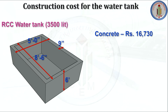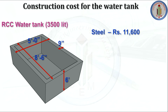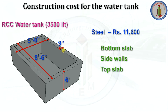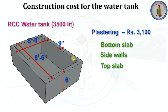For reinforced steel — bottom slab, sidewalls, and top slab — we require 11,600 rupees. Walls have double mat reinforcement on both sides. Steel price is currently 84 rupees per kg. For plastering — bottom slab, sidewalls, and top slab — we require 3100 rupees. Plastering is done on a square feet basis, covering all four walls, bottom slab, and top slab.